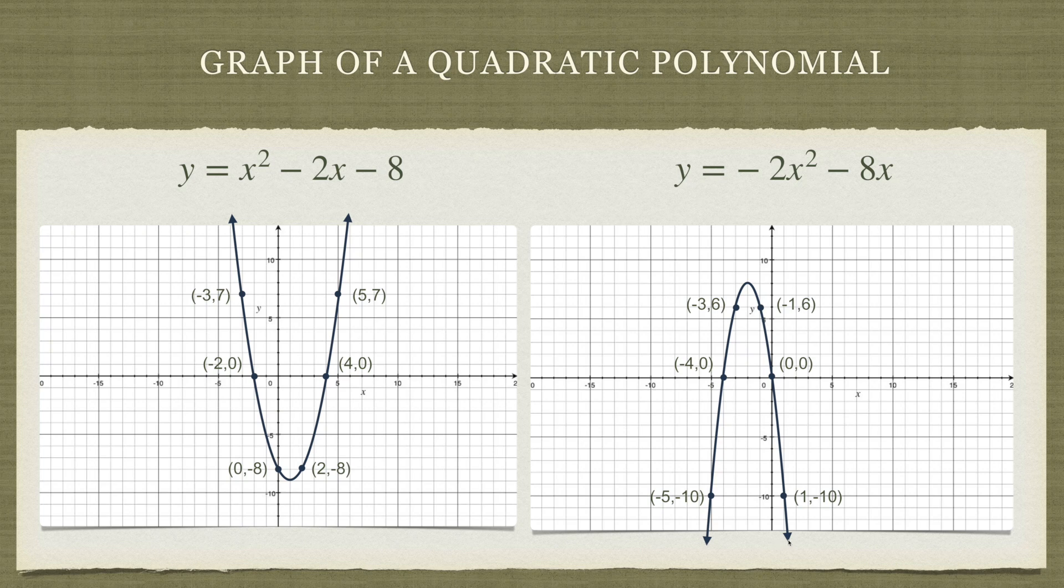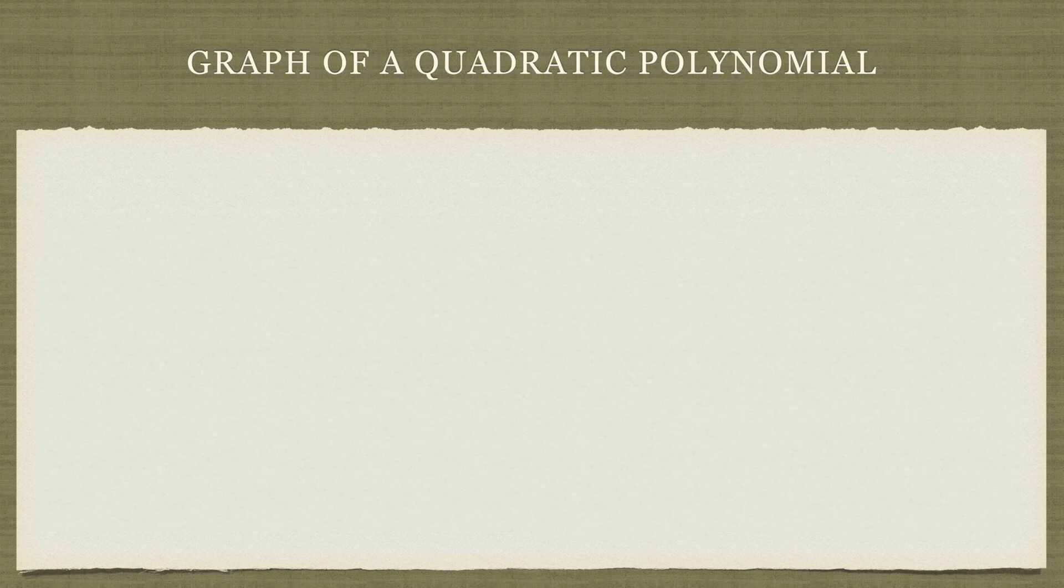So the question is, is there any way that we can tell without actually plotting the parabola? Can we say something about the shape of the parabola as it relates to whether it is looking up or looking down? The answer, it turns out, is yes, indeed we can.